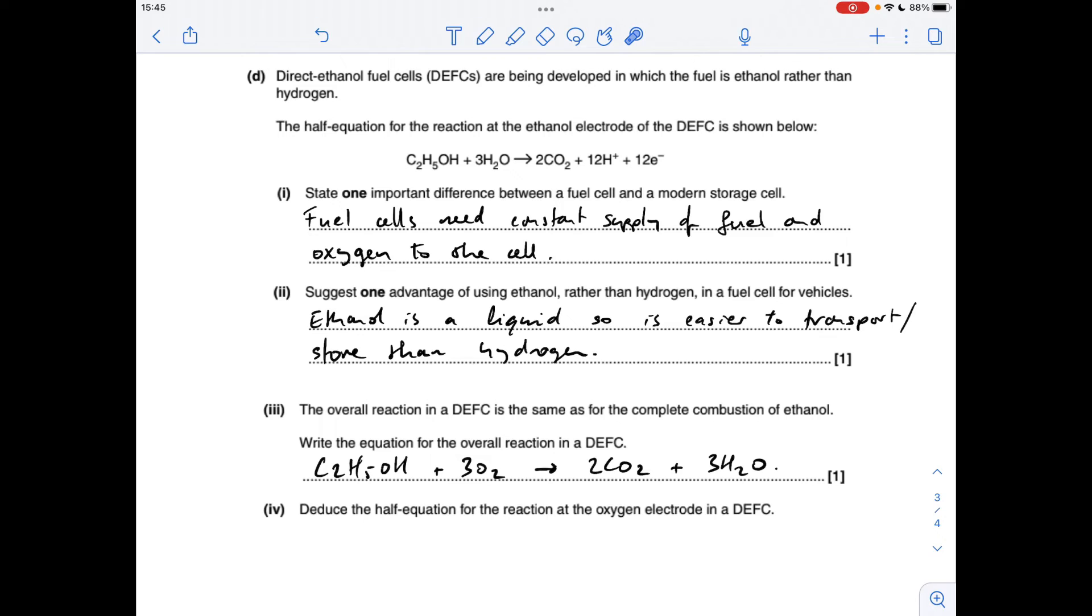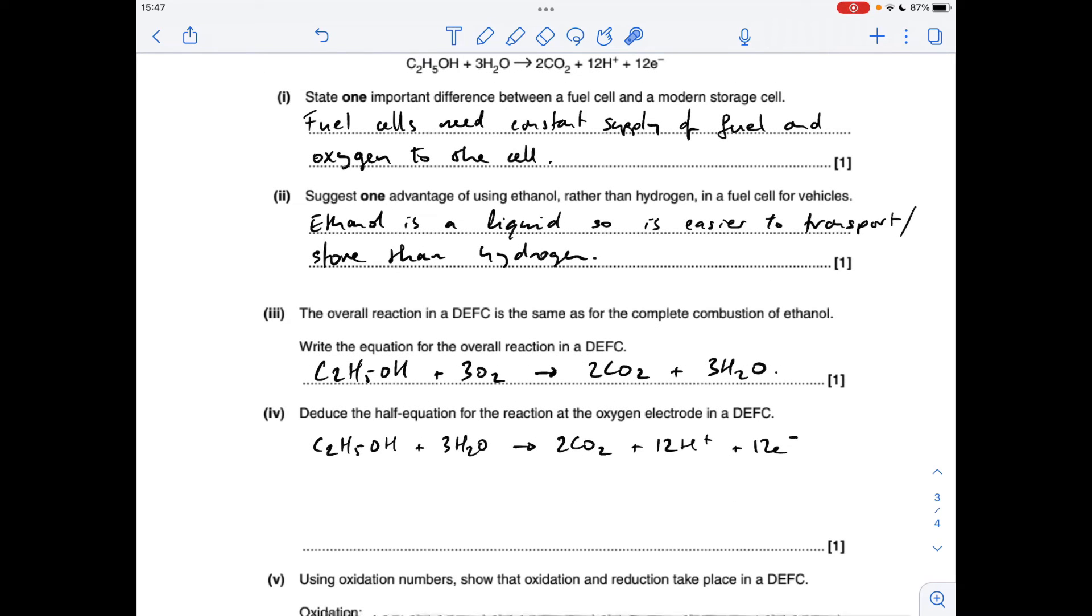The complete combustion of ethanol, which is the overall reaction for this cell, is that there. And the next part, the reaction for the oxygen electrode in this fuel cell. So we've got the overall equation here and we've got the ethanol half equation here.